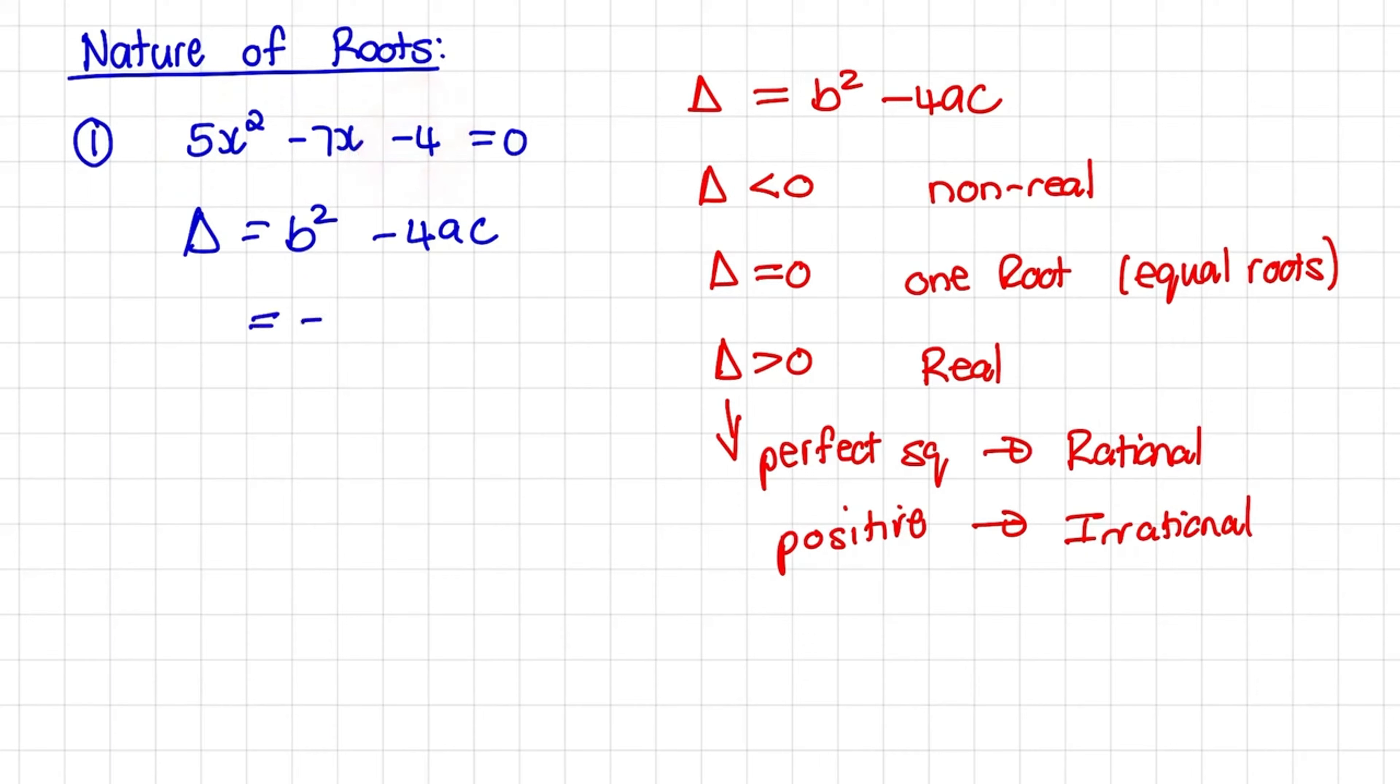So b squared would be negative 7 squared minus 4 times 5 times negative 4. And that is equal to 129.